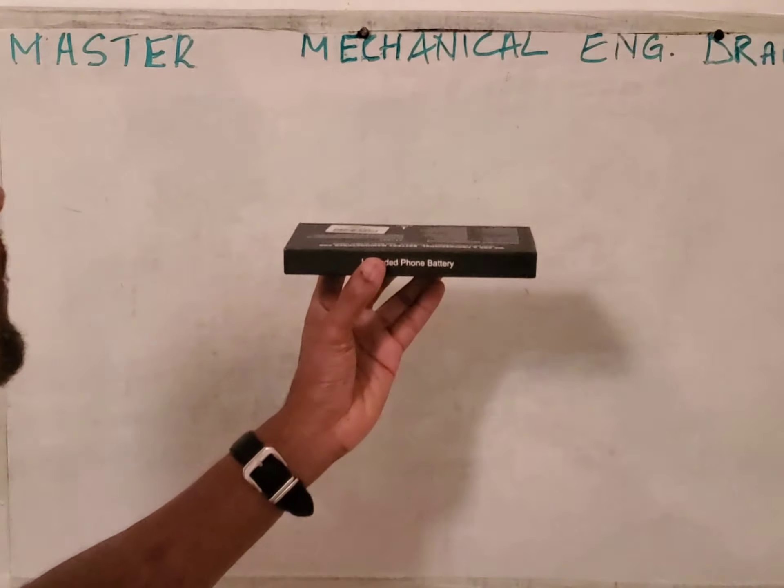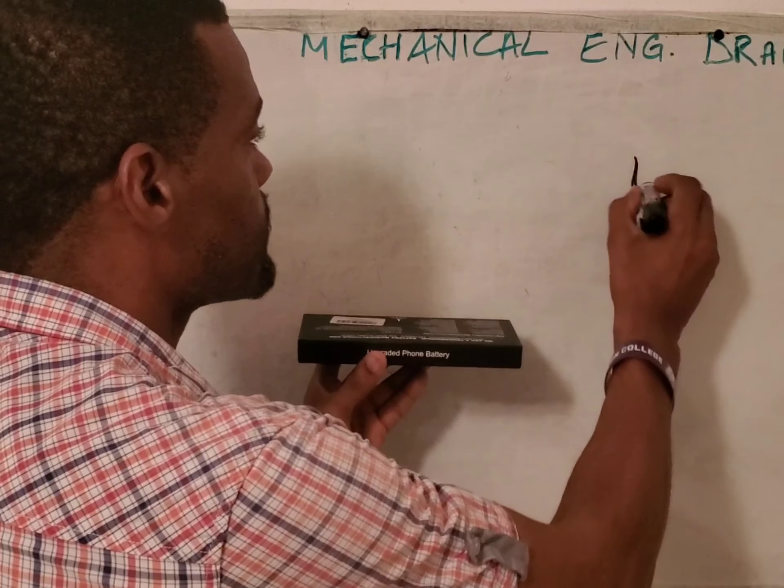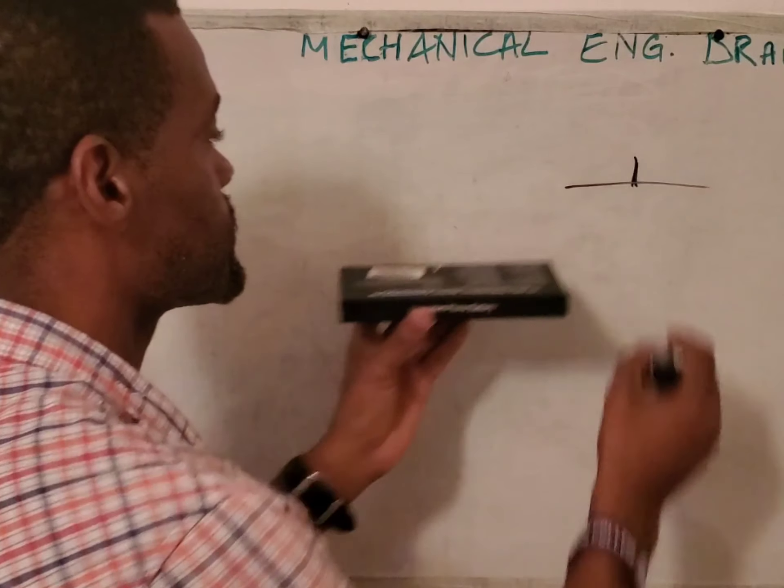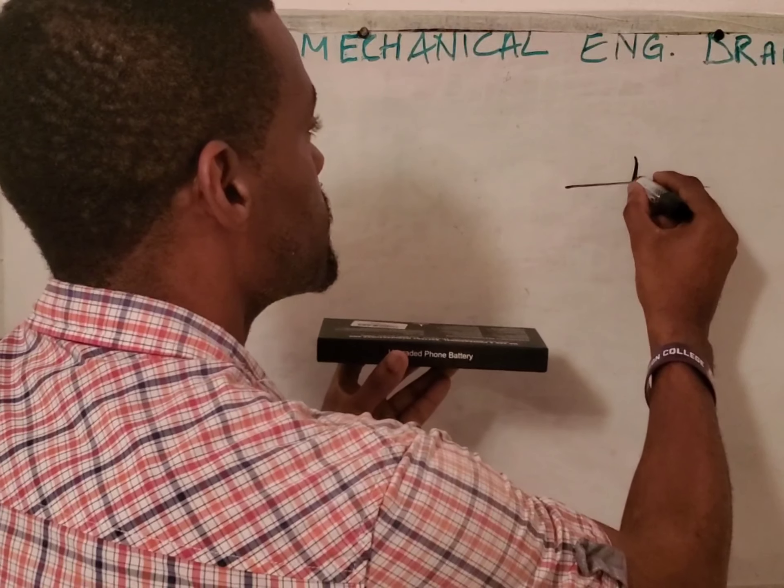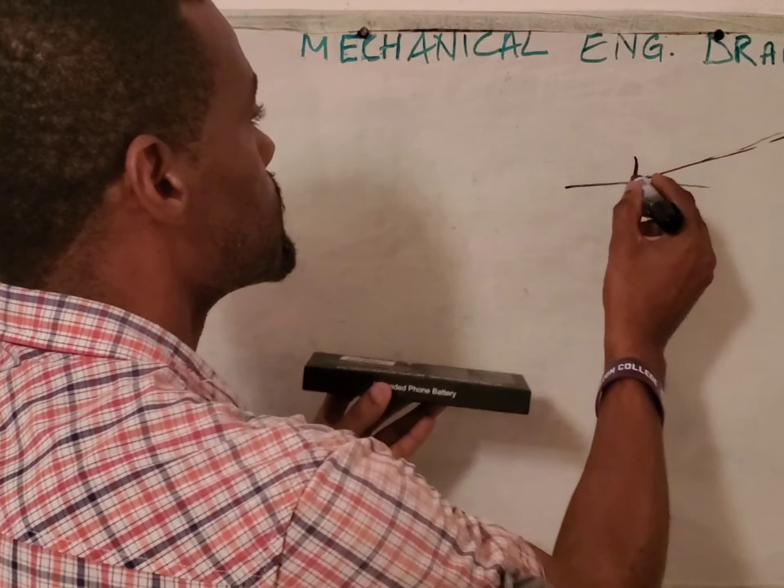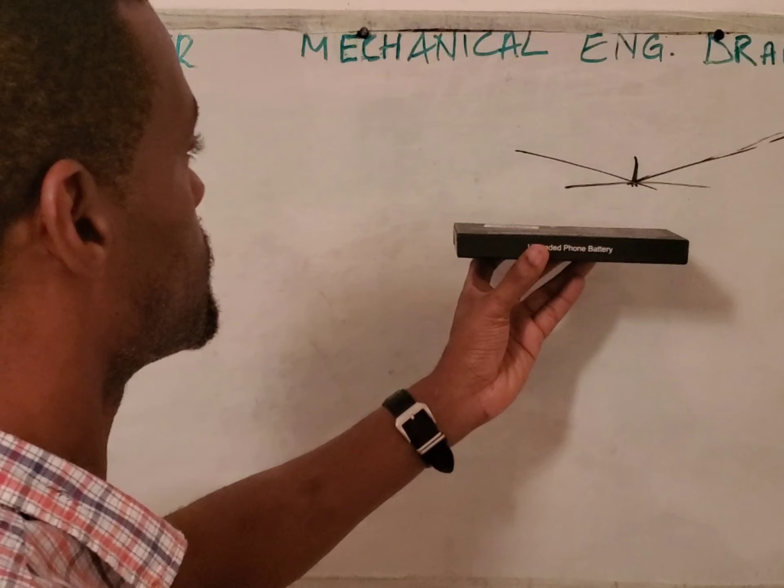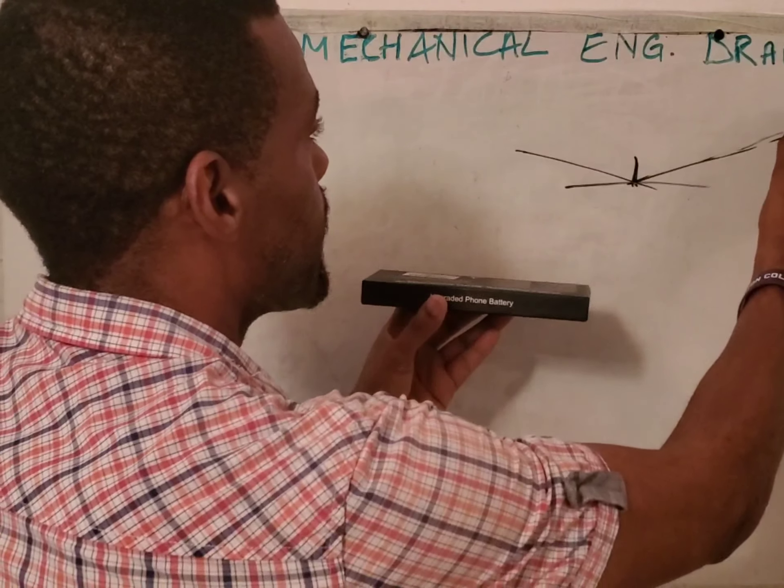To sketch this in isometric projection, quickly first establish horizontal, vertical, and draw this line and produce this line here. Then get my height.